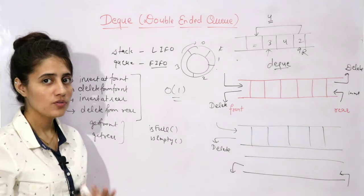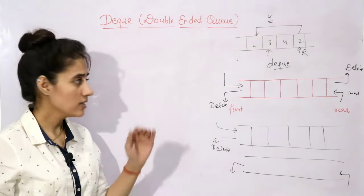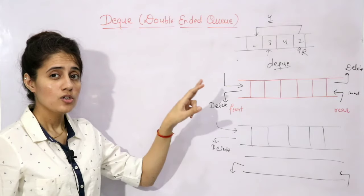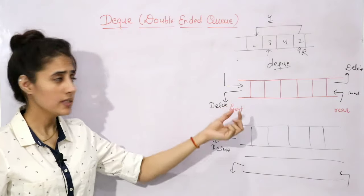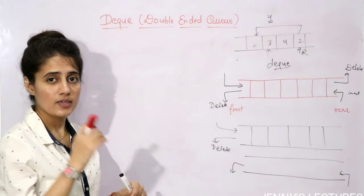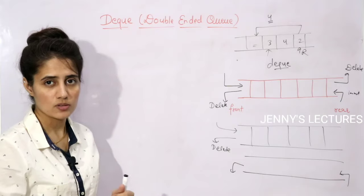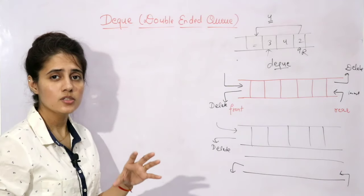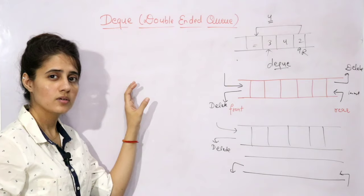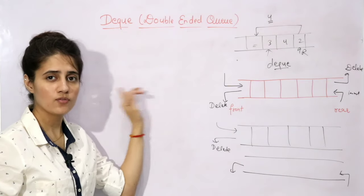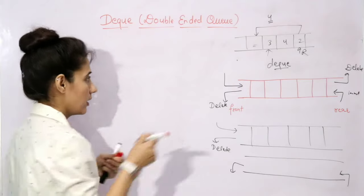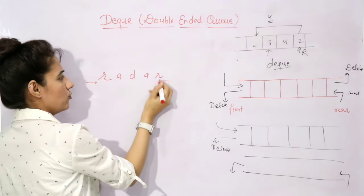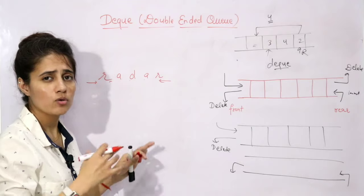Now let's see some applications of dequeue. As discussed, it has the property of both stack and queue, so it can be used as both. The first application is that it can be used to perform redo and undo operations. The second is that it can be used as a palindrome checker — a palindrome reads the same from both ends, for example 'radar' reads the same forwards and backwards.